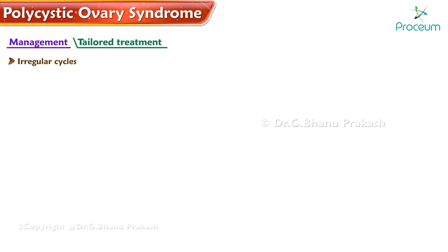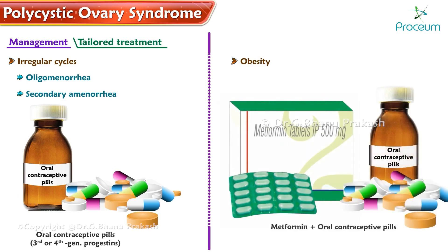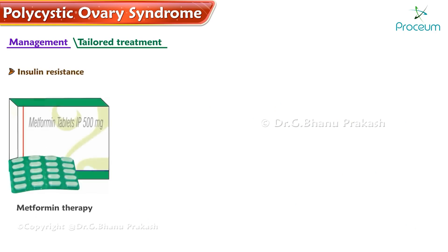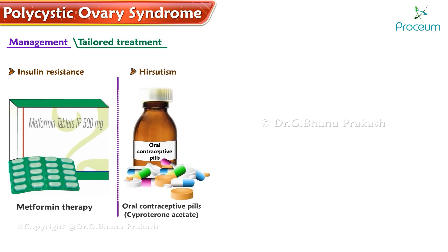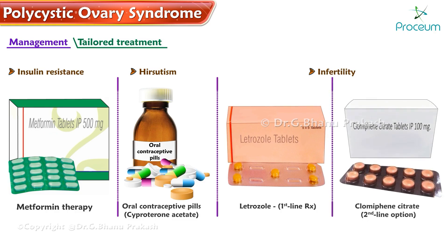For tailored treatment: irregular cycles with oligomenorrhea and secondary amenorrhea are addressed through oral contraceptive pills containing third or fourth generation progestins. Obesity-related conditions are managed through metformin therapy alongside oral contraceptive pills. Insulin resistance is managed by metformin. Hirsutism is treated with oral contraceptive pills containing cyproterone acetate. In cases of infertility, letrozole is first-line treatment with clomiphene citrate as a second-line option.